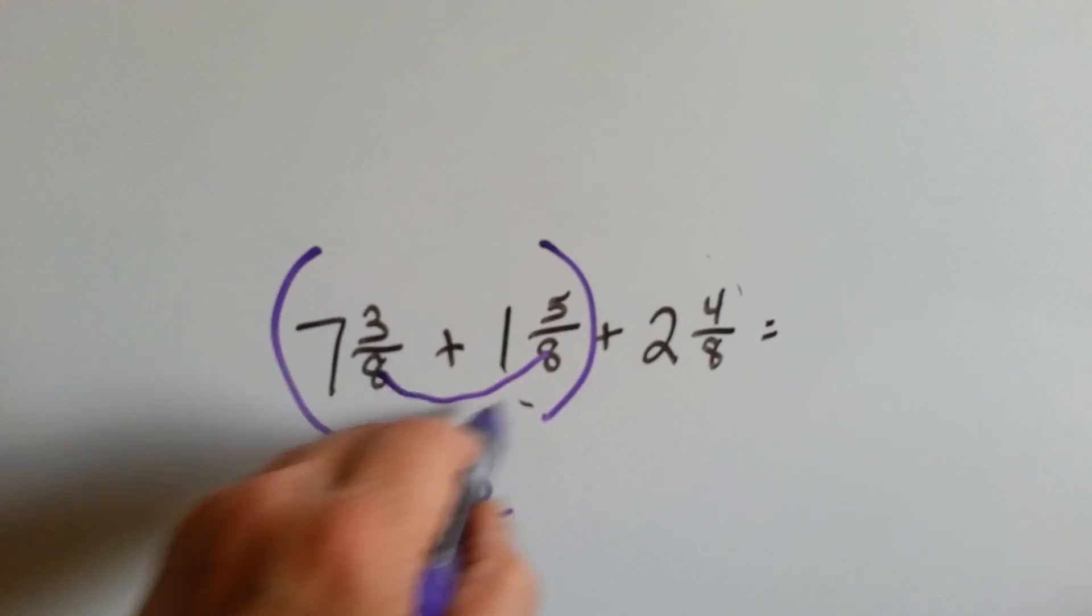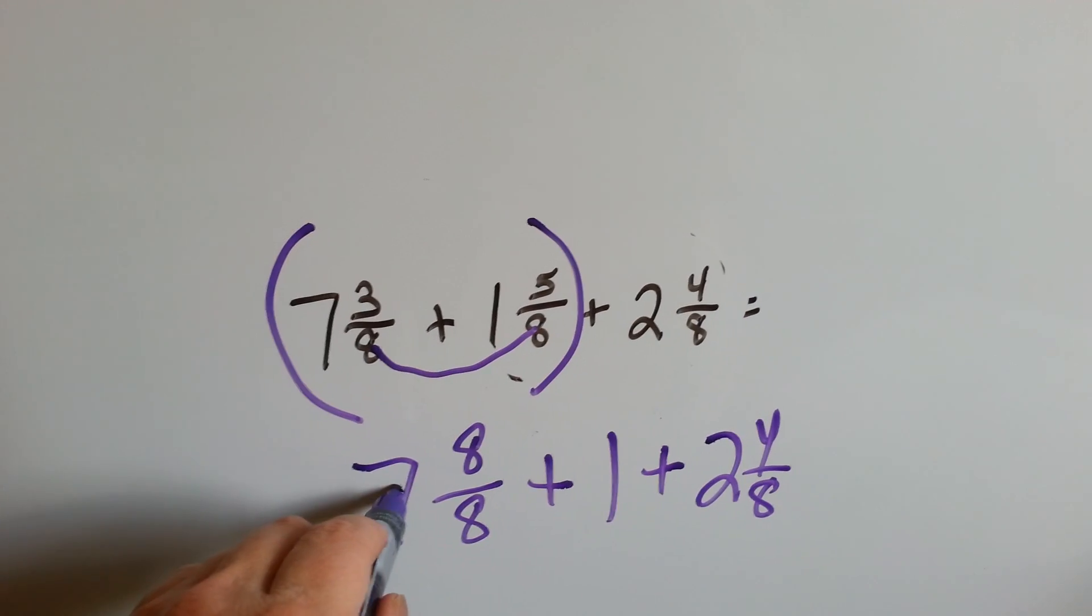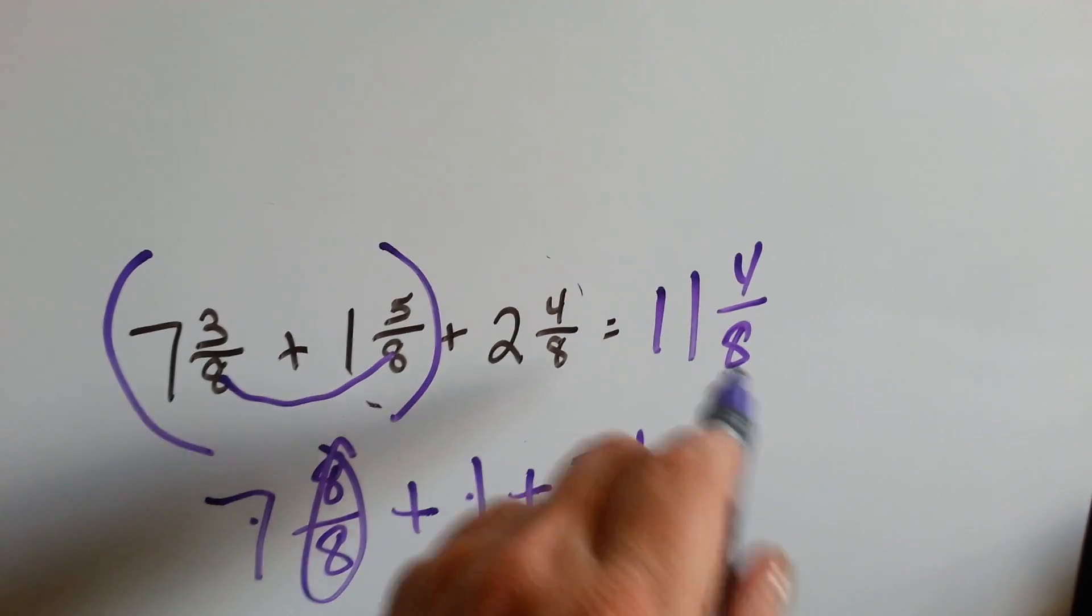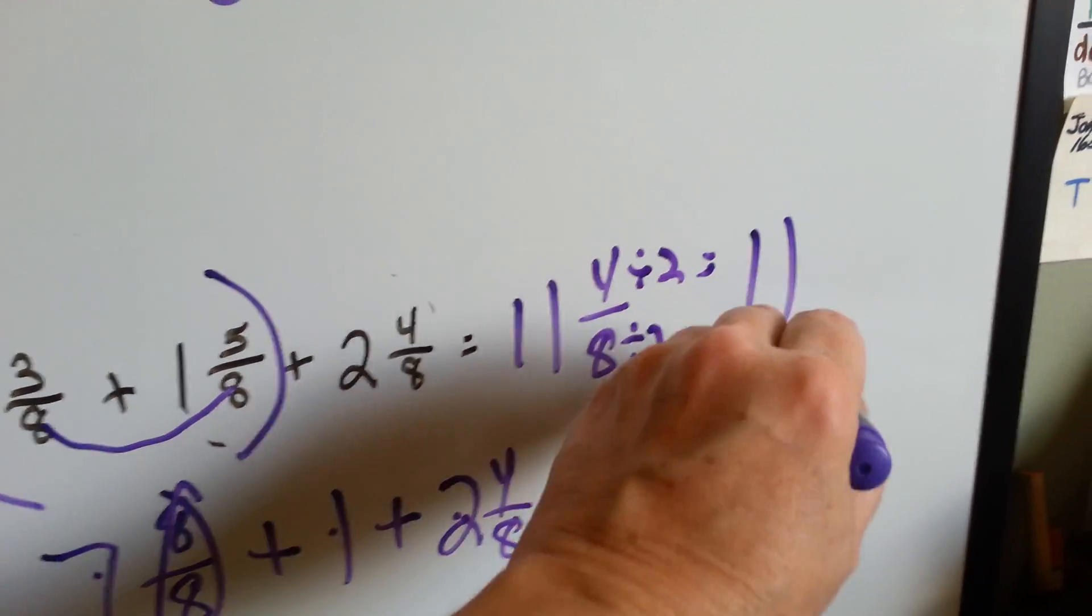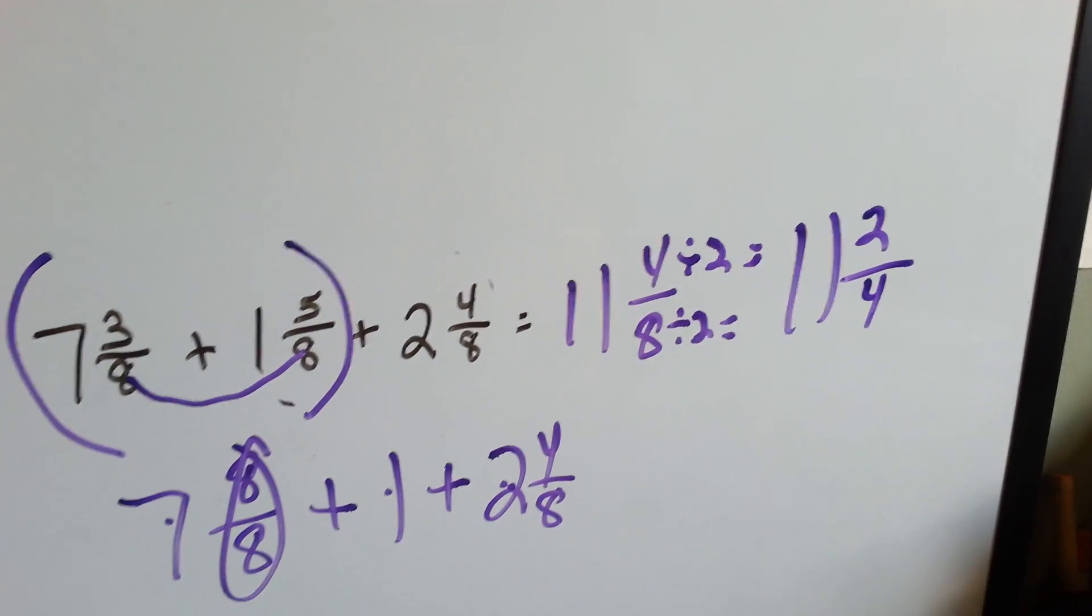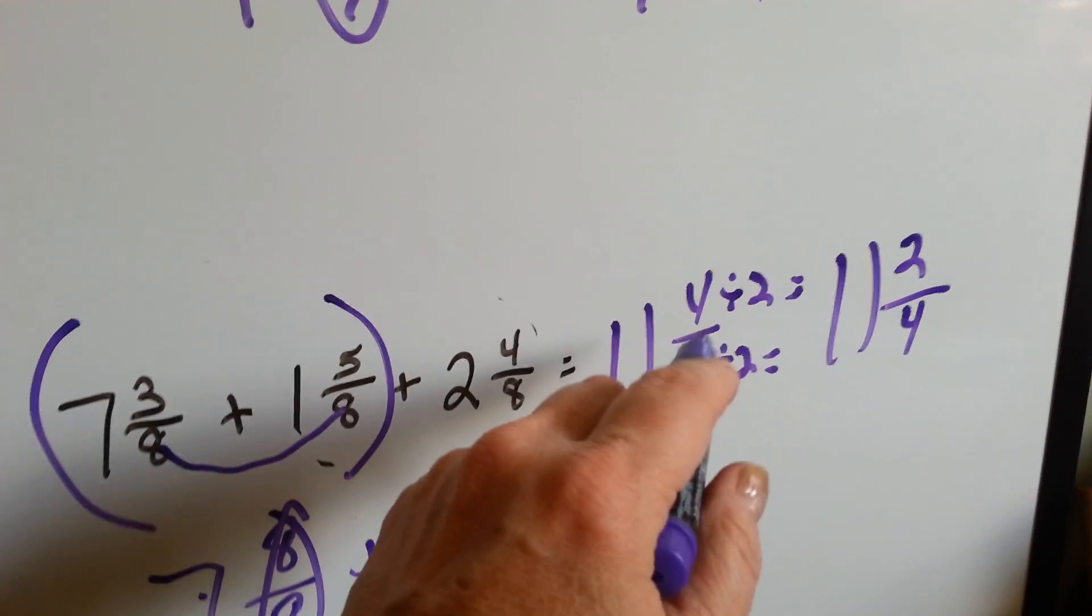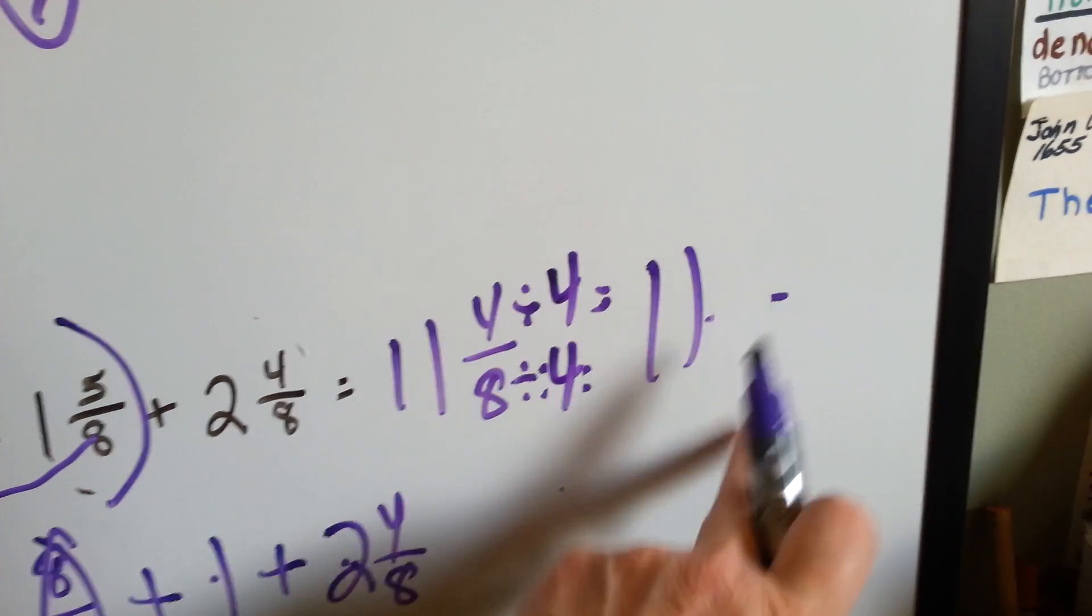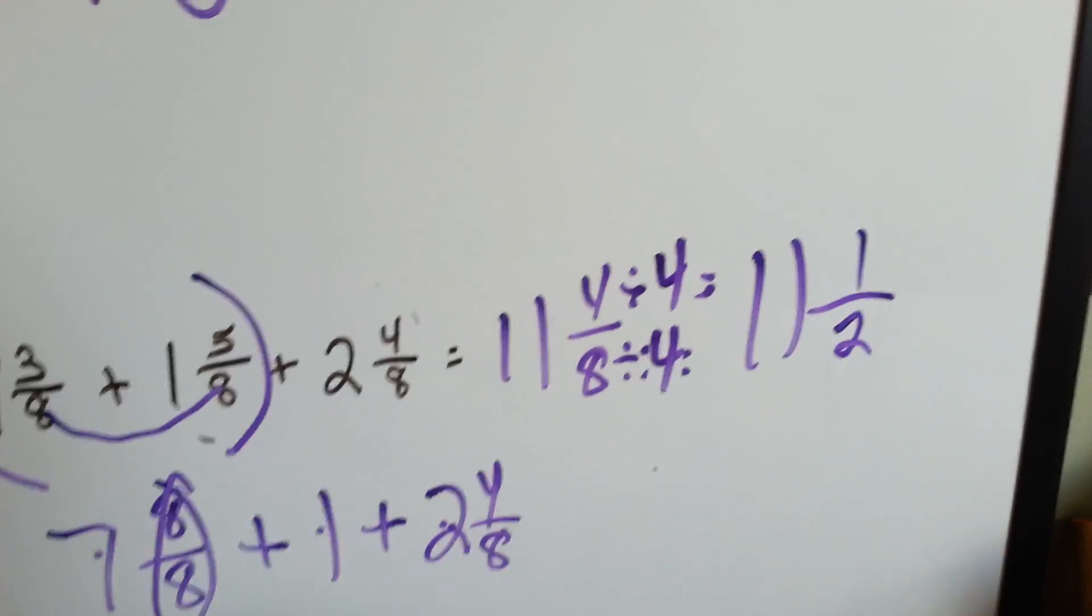So now we've got a 7. We've got an 8 eighths plus a 1 right here, and then plus 2 and 4 eighths. 7, 8, 9, 10, 11, and 4 eighths. And the 4 eighths can be reduced. The 4 can be divided by 2, and the 8 can be divided by 2. And we get 11, and 4 divided by 2 is 2, 8 divided by 2 is 4. Look, we can do it again. Now what would have happened if I had divided this by 4 instead of 2? We would have saved ourselves some trouble. That's why we want to do the greatest common factor when we're reducing. If we had divided each side by 4 instead of the 2, we would have immediately gone to 4 divided by 4 is 1, and 8 divided by 4 is 2. It gives us 11 and a half.